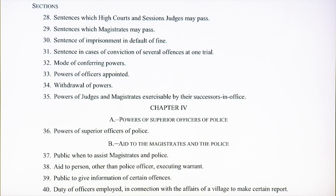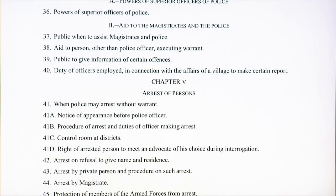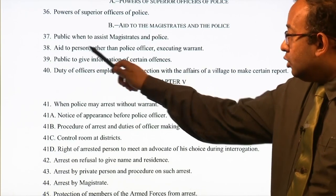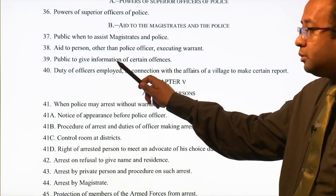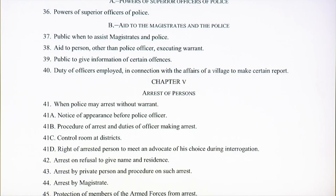Chapter 4 deals with Powers of the Police, covering powers of superior officers of police, aid to magistrates and police, public meant to assist magistrates and police, aid to persons other than police officers executing a warrant, public to give information of certain offenses, and duty of officers employed in connection with village affairs to make certain reports. It talks about the powers of police and also gives duties to the public to aid police officers and give information, because police officers require assistance to perform their duties.